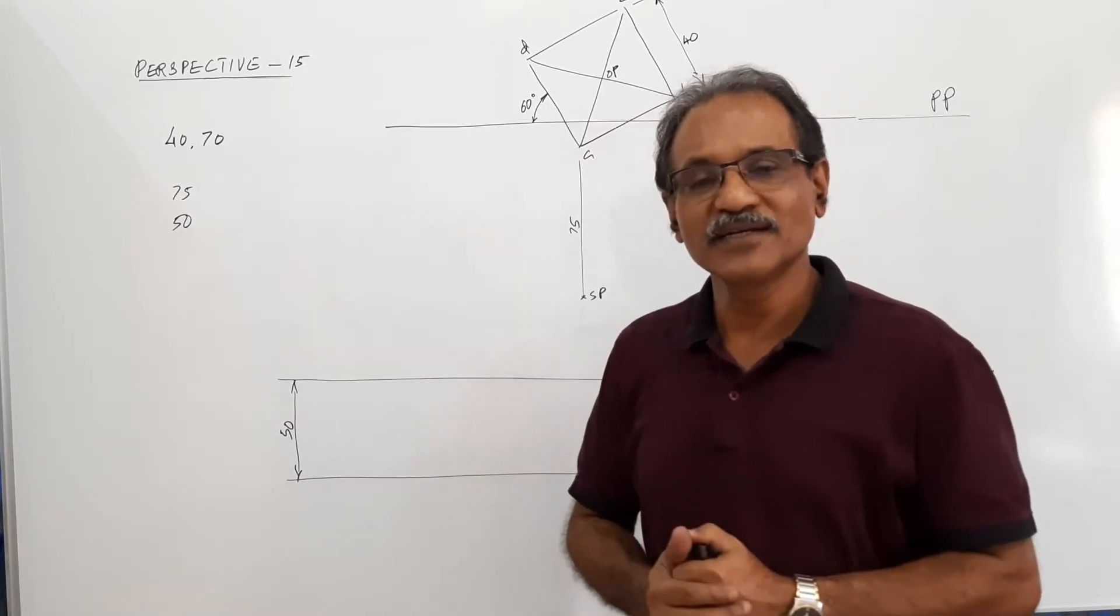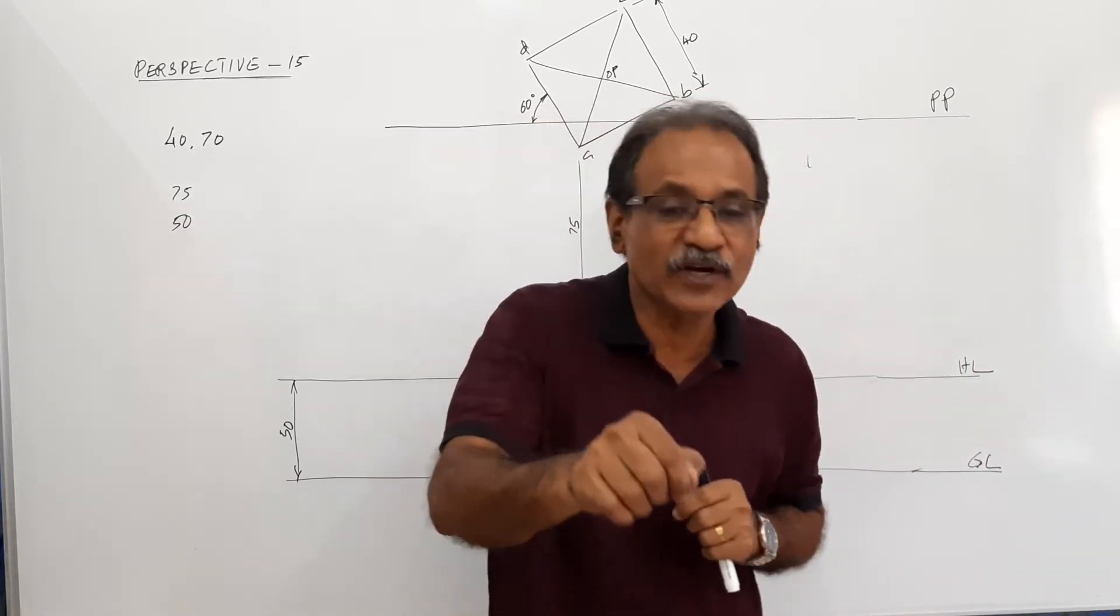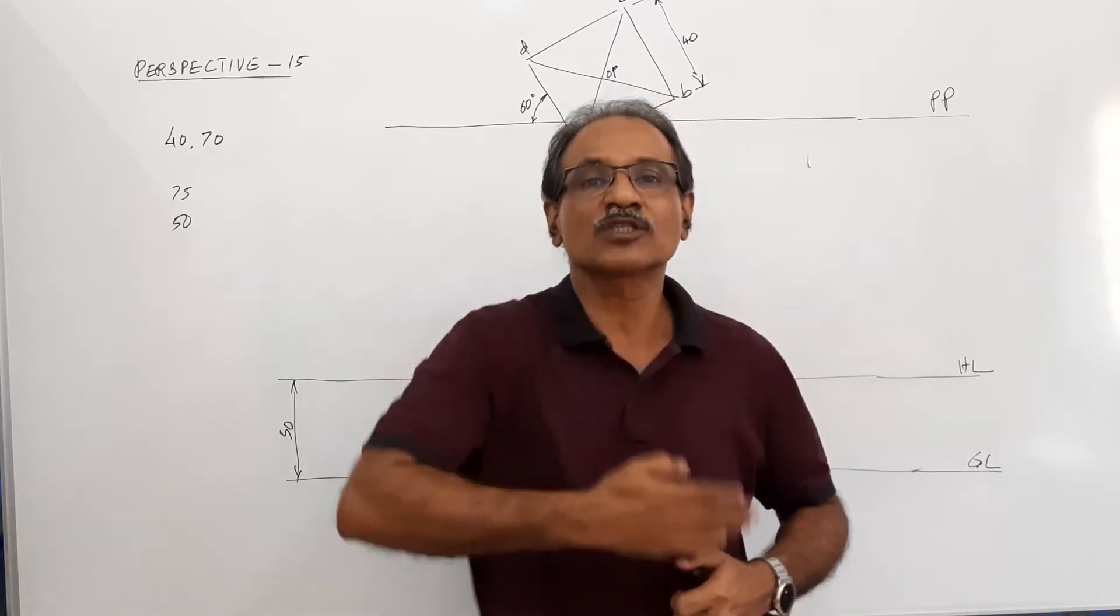A square pyramid resting on the base of the ground with a corner of base in front of BP and the remaining part behind BP. That means the BP crosses the object.